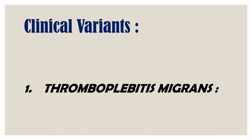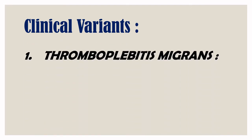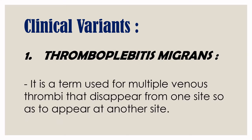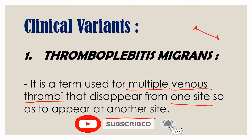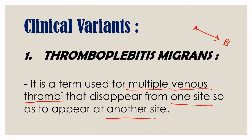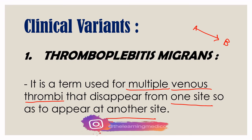There are clinical variants. First is Thrombophlebitis Migrans. Migrans means moving — it is a term used when there are multiple venous thromboses. There are many venous thrombi; they disappear from one place and move to another. Migrans means they move from one site to another.